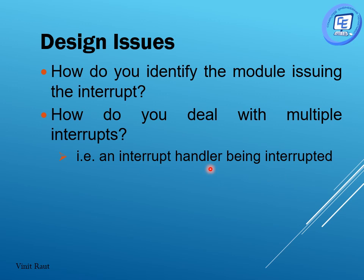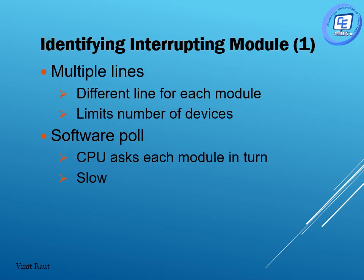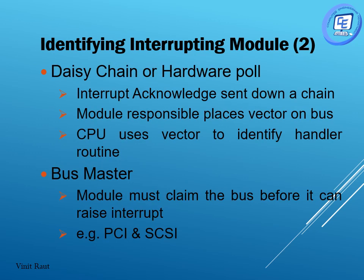In interrupt-driven IO, there are design issues. How do you identify the module issuing the interrupt? Suppose there are multiple peripheral devices trying to send interrupts, but the processor has only one input line to receive the interrupt — how does the processor know which device is issuing the interrupt? Also, how do you deal with multiple simultaneous interrupts? For example, an interrupt handler itself being interrupted. Solutions include multiple lines, software chain, and bus master.